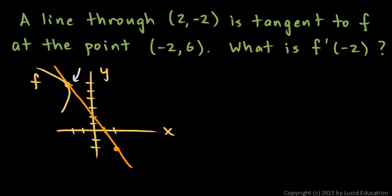So we just need to find the slope of the line, and that's the answer to the question. So the slope is just y₂ minus y₁, that would be -2 minus 6,